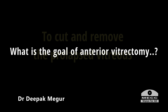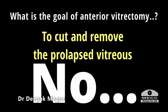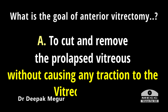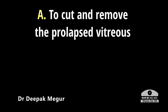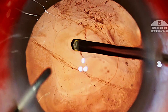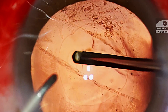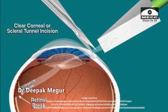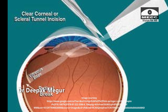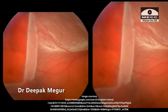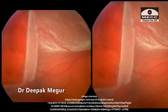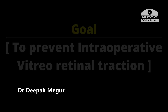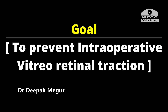What's the goal of anterior vitrectomy? Is it to remove the prolapsed vitreous? No. The answer is: the goal is to remove the prolapsed vitreous without causing any traction to the vitreous base. Not causing traction to the vitreous base is probably the most important goal. Any pull on the vitreous will induce vitreoretinal traction, which is not visible to us but can eventually lead to a giant retinal tear — which is extremely difficult to manage.